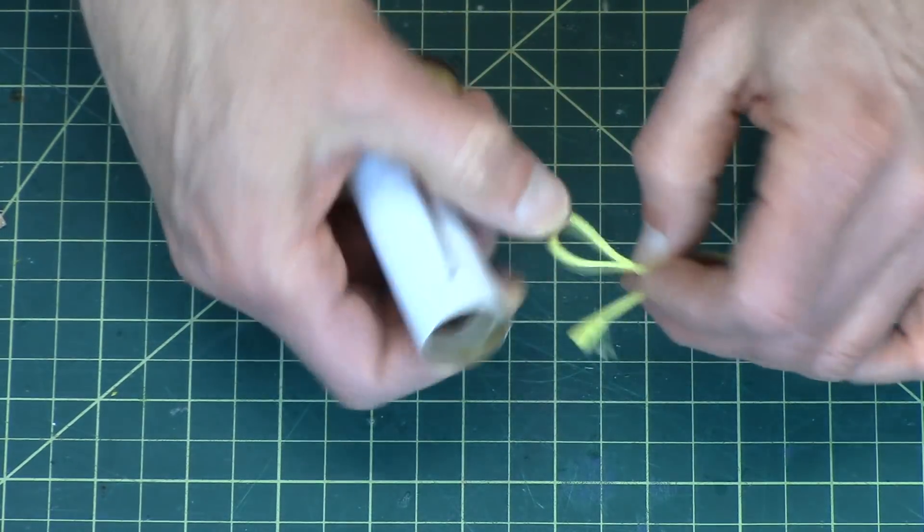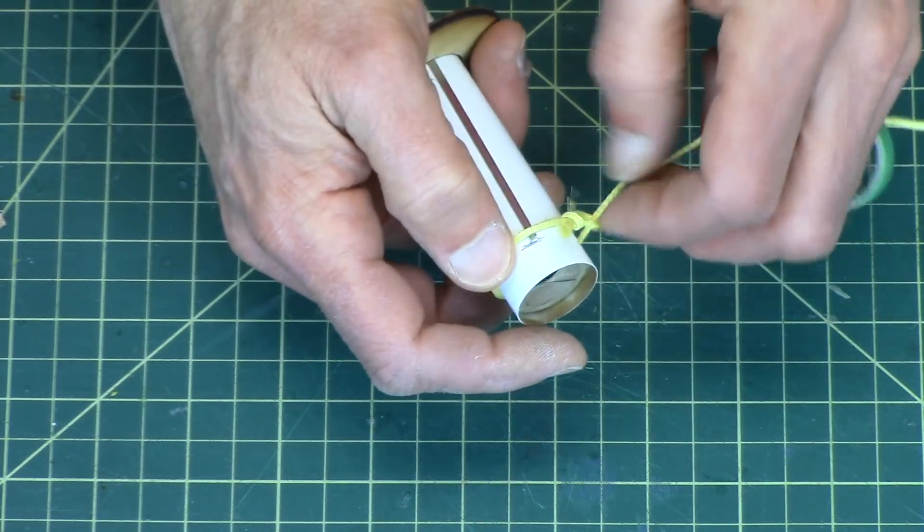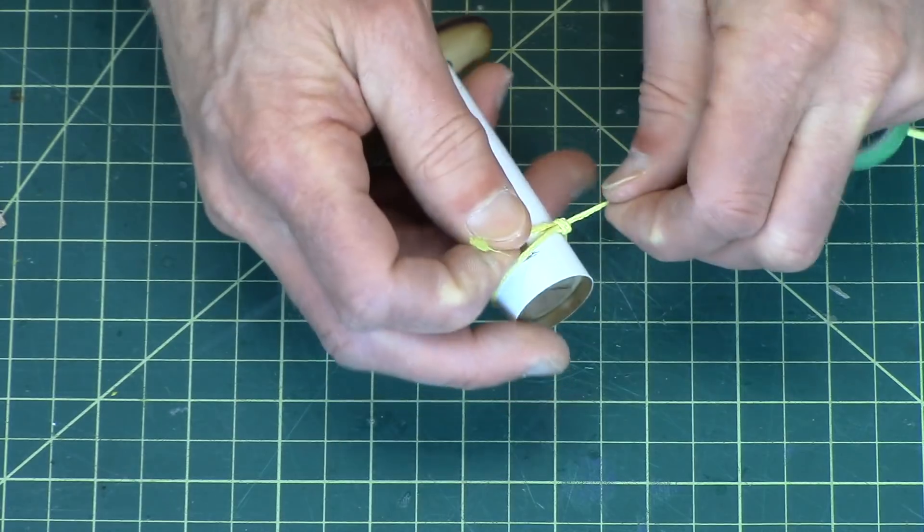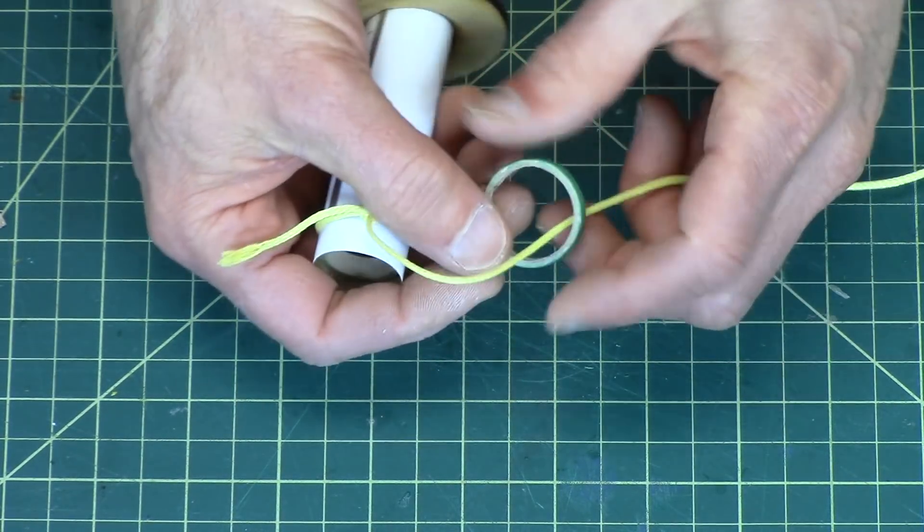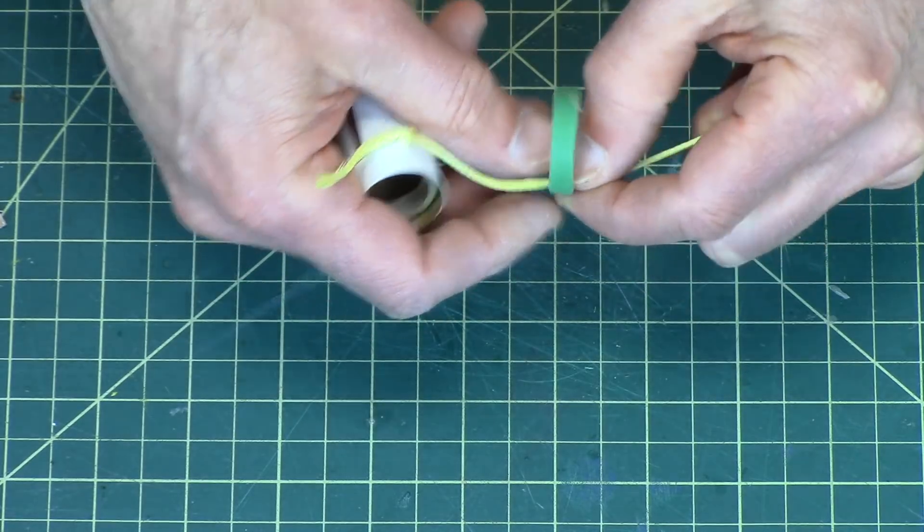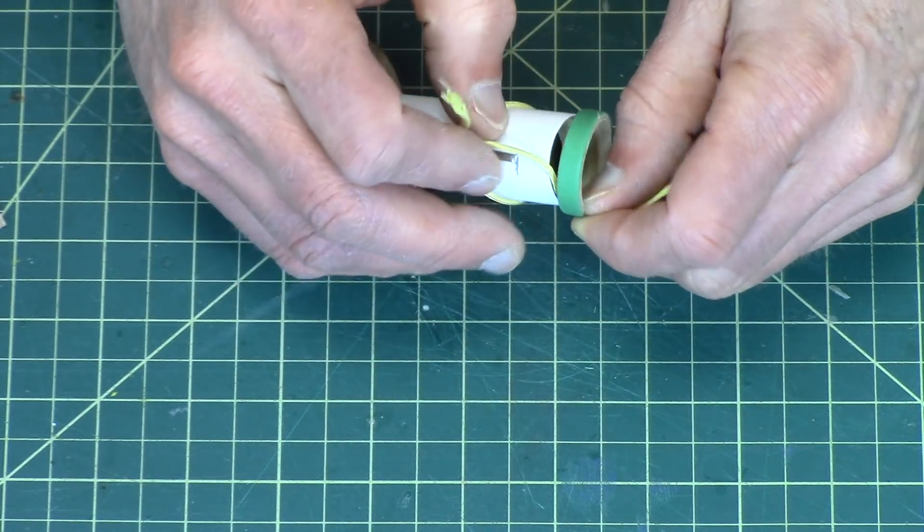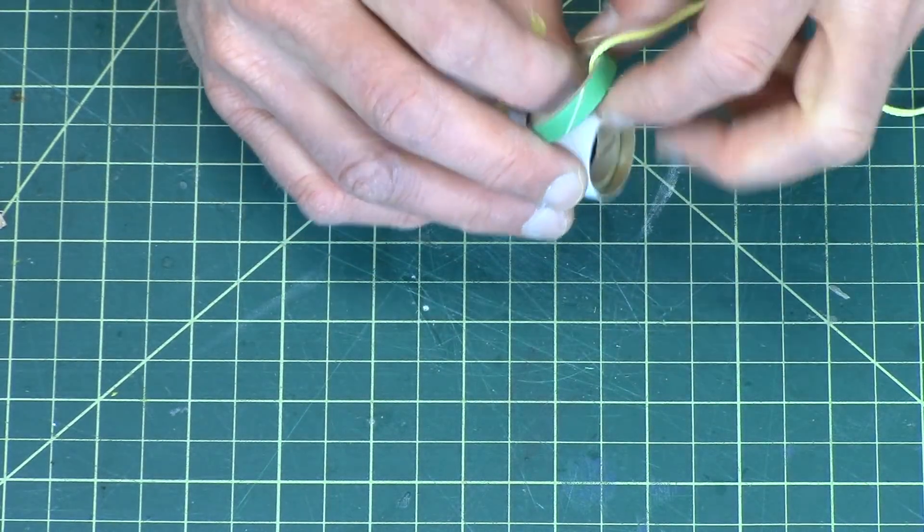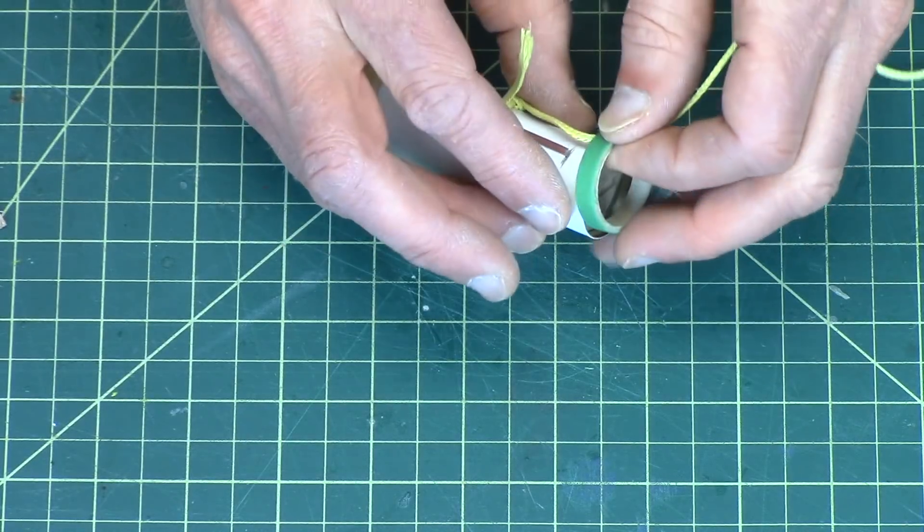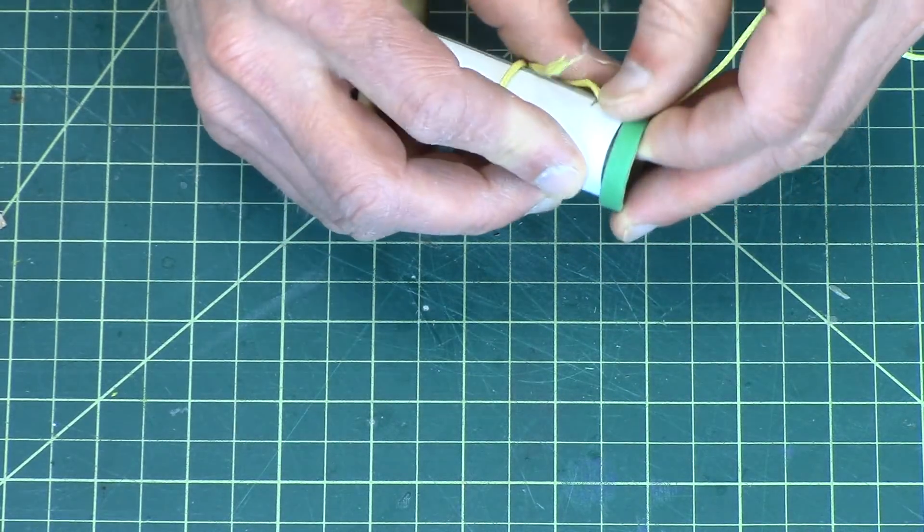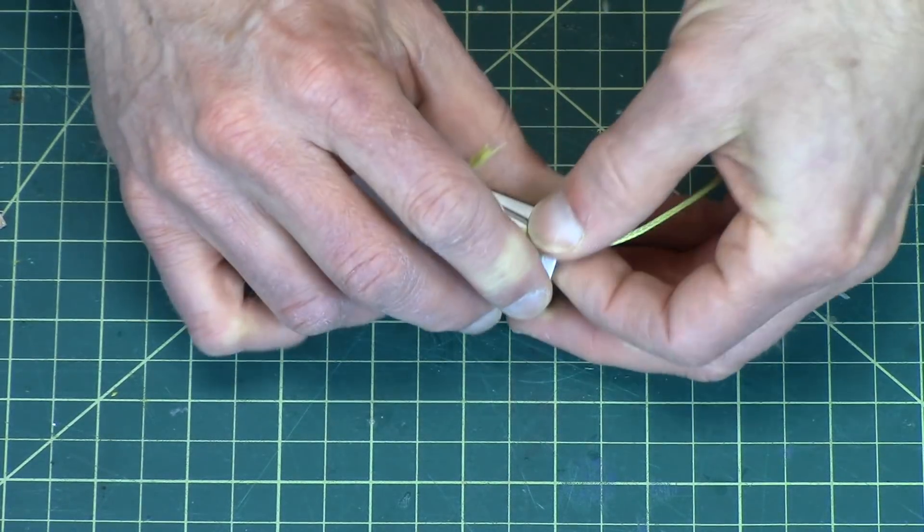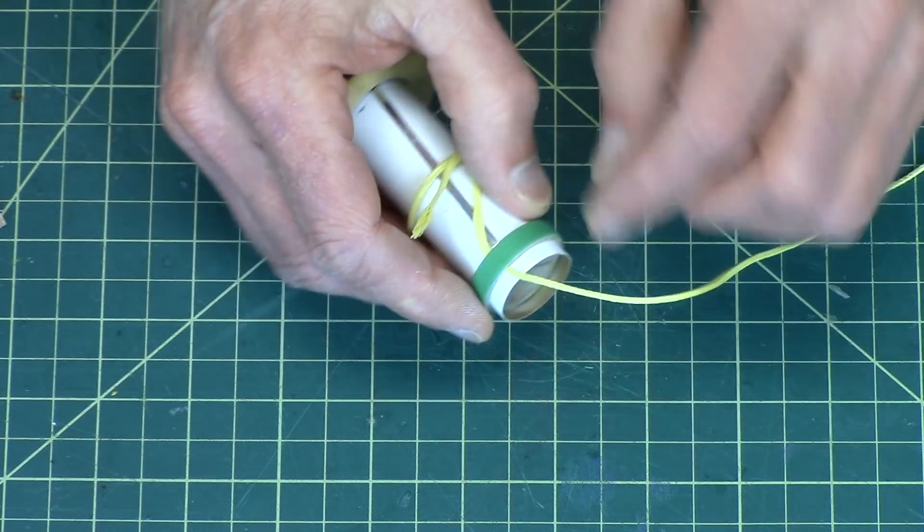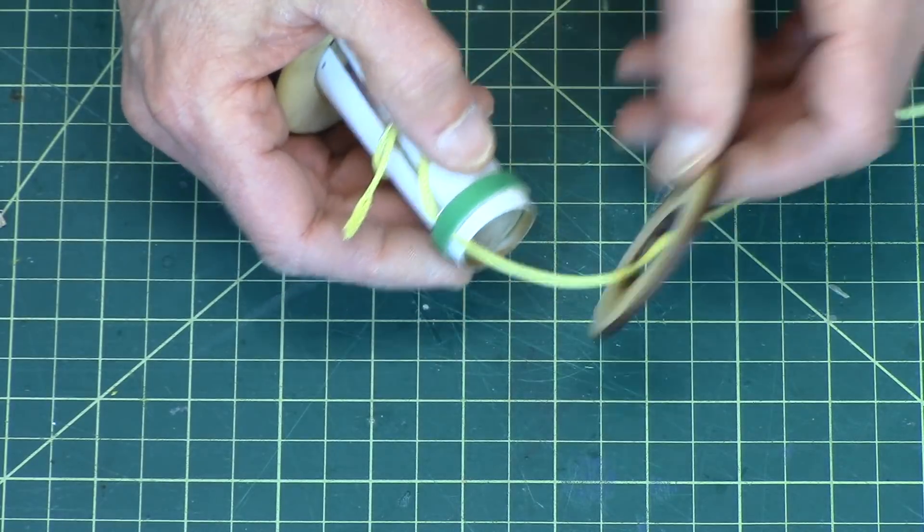And then find your notch, put it in the notch, and push it over the tube. And you want to push it over so that you have a big enough gap there so you can also put that one on.